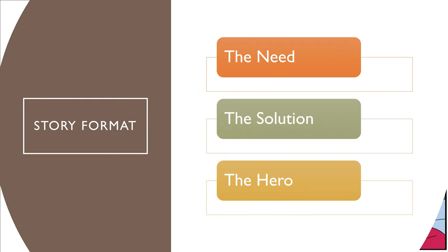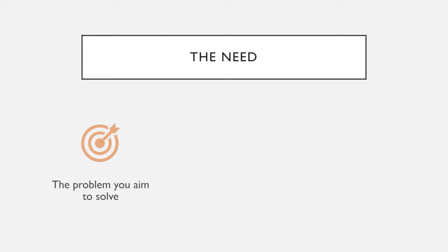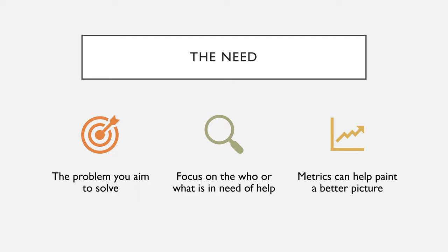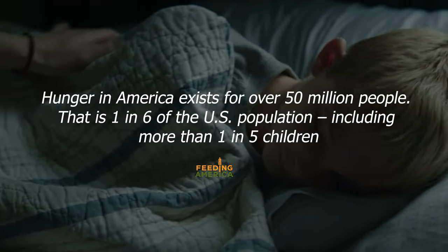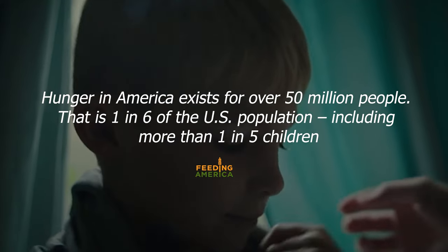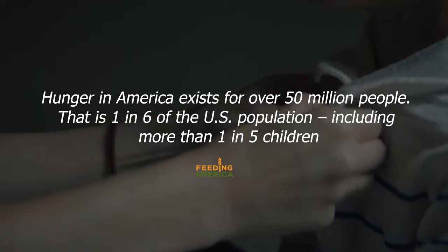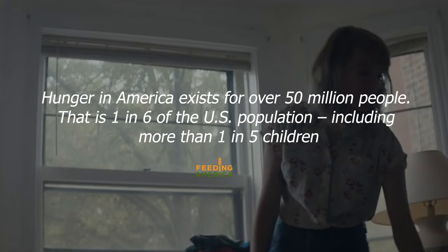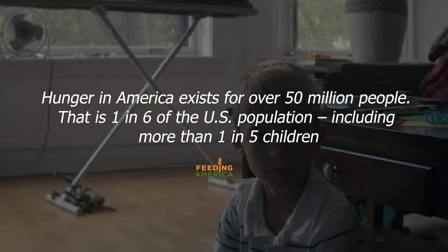Here's a format you should follow when writing your story: start with the need, the solution, and end with the hero. Starting with the need — the need is the problem you aim to solve. Focus on who or what is in need. Be descriptive. Use images or statistics to paint a clearer picture. Now let's take a look at an example from the non-profit organization Feeding America. Hunger in America exists for over 50 million people — that's one in six of the U.S. population, including more than one in five children. In two sentences, they describe what the problem is, how many people it impacts, and use statistics to focus in on the children in need.